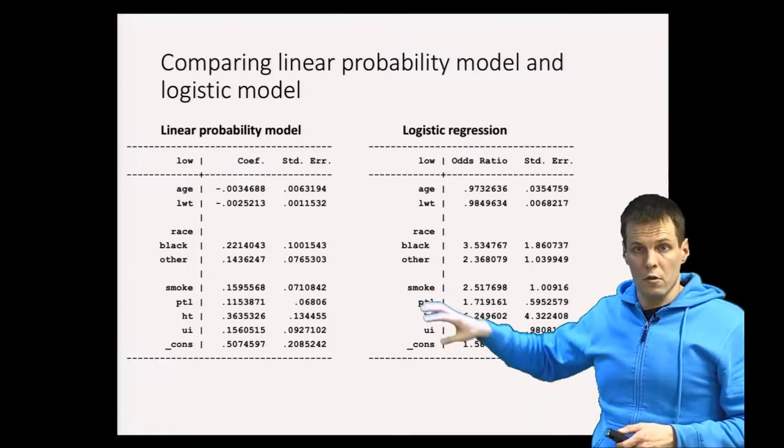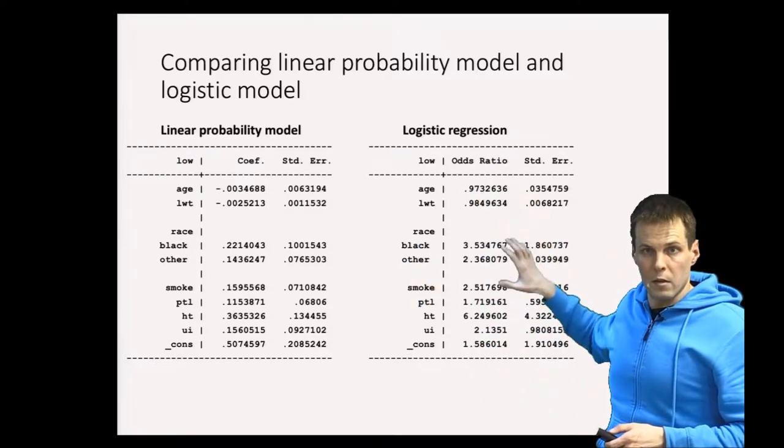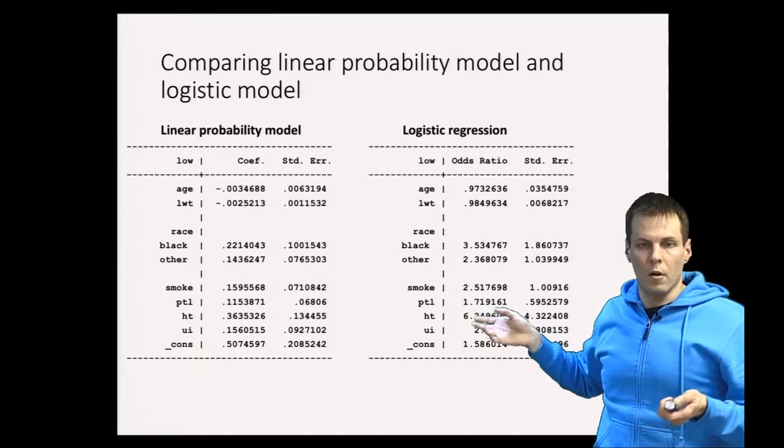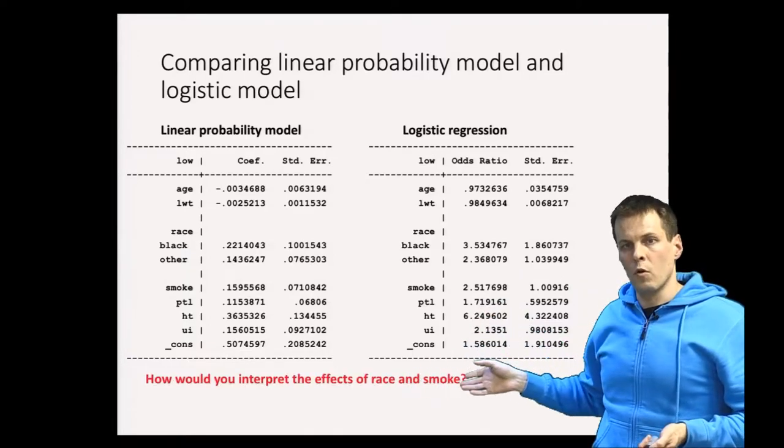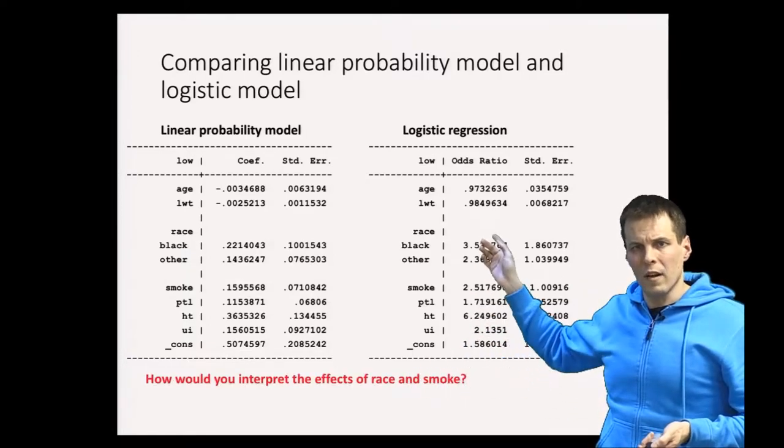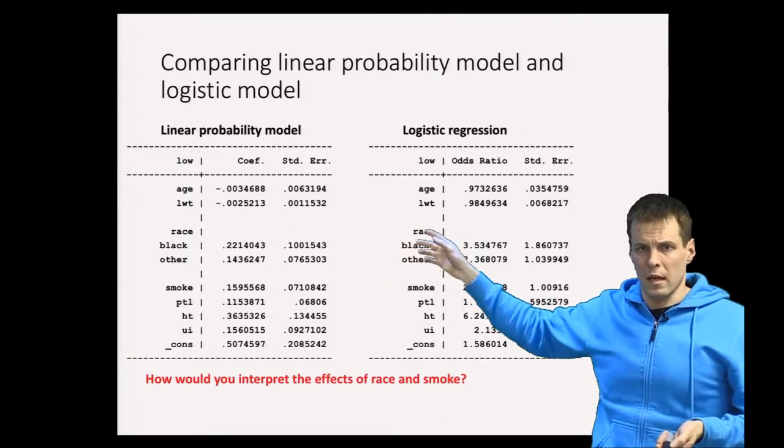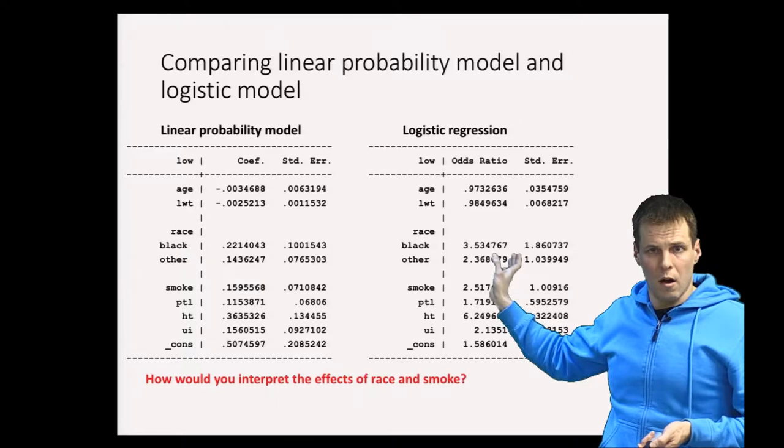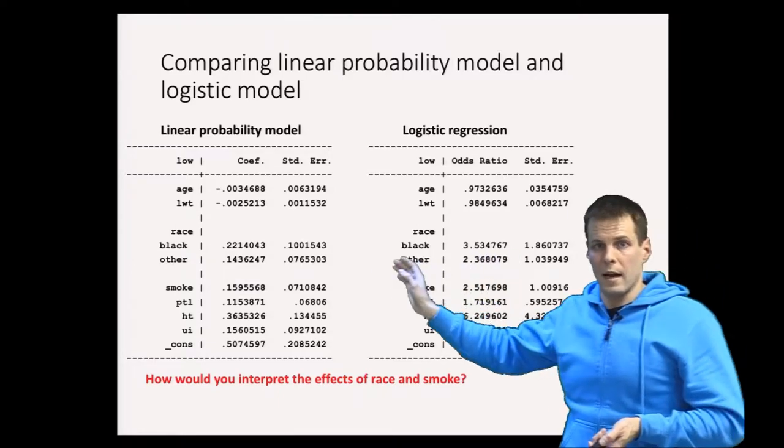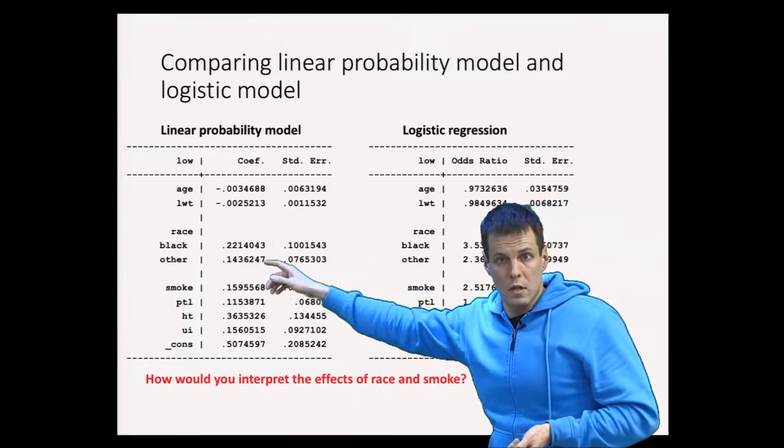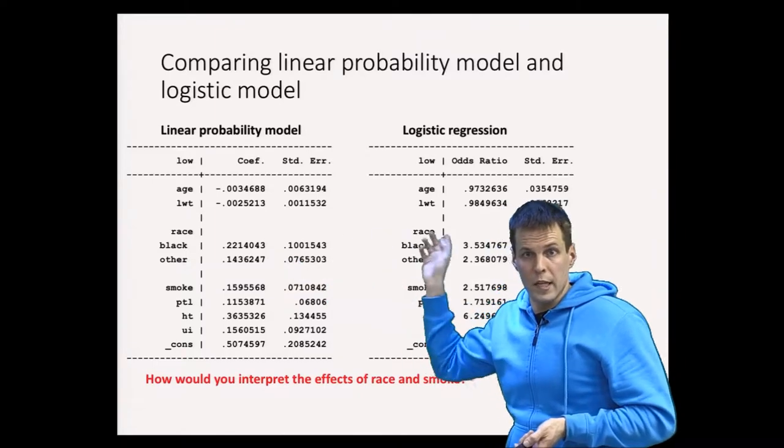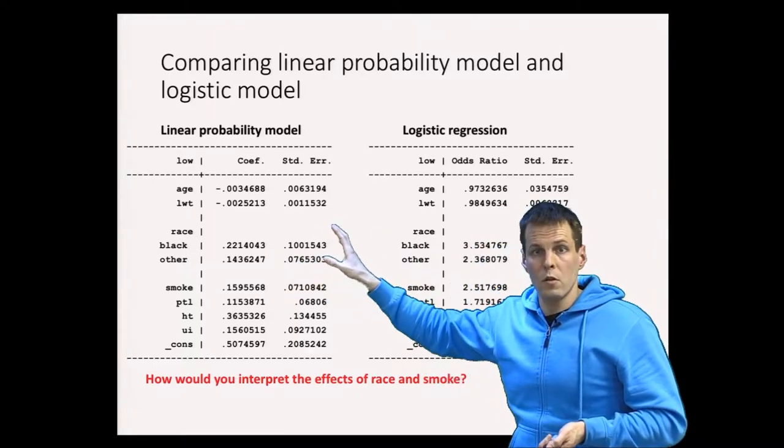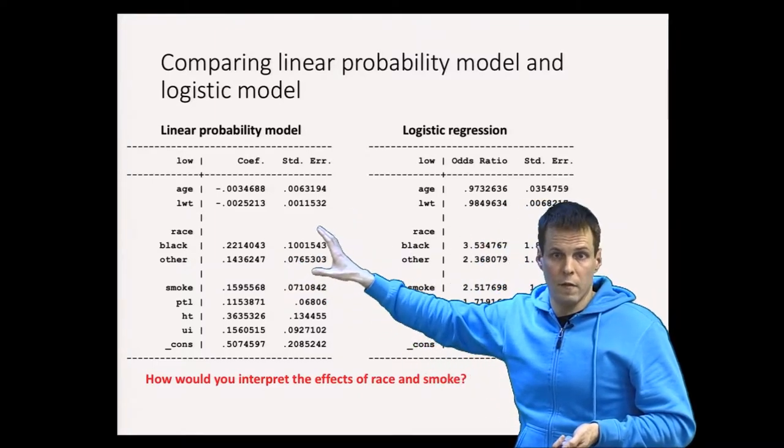Plotting is very useful to understand what these effects look like. When we compare the effects of race and smoke, these are not really comparable. It's difficult to say whether 3.5 increase in odds is a larger effect than 22% increase in probability because they are expressed in different scales and we're usually interested in the original scale of the variable.